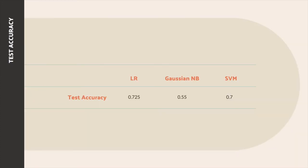To our surprise, the test accuracy of these methods is quite high: about 72.5% for logistic regression, 55% for Gaussian naive Bayes, and 70% for support vector machine. Our guess for why this outperforms the deep learning results is that the extracted features better preserve the characteristics of the whole sound, while the CNN input data is fragmented due to input size restrictions.